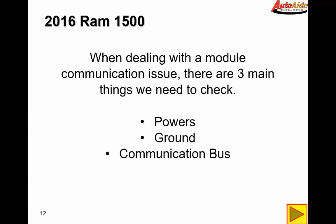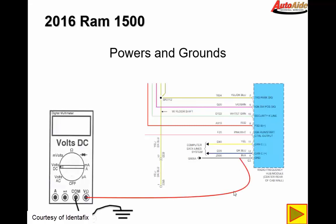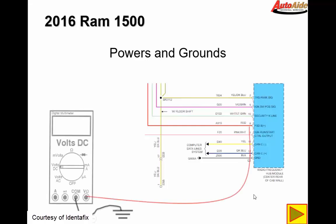Once the seat is removed and you have access to the module, there are three main things we're going to have to check — and this goes with any kind of module communication issue. The three main things are powers, grounds, and the communication bus. First we're going to start by looking at the ground circuit. Getting the voltmeter out and measuring voltage on the ground circuit — we have no voltage on that circuit, which tells us that circuit is okay. Now checking the power input to the radio frequency hub, on that circuit we only have half a volt. That is a problem.